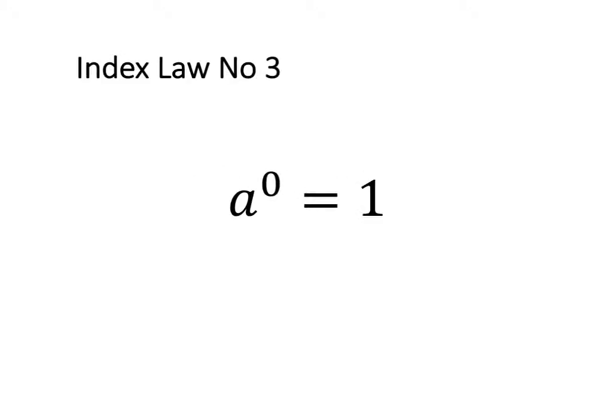In this video we're going to have a look at how to simplify expressions using the third index law. The third index law states that any base to the power of 0 is going to equal 1. So let's have a look at a couple of examples.